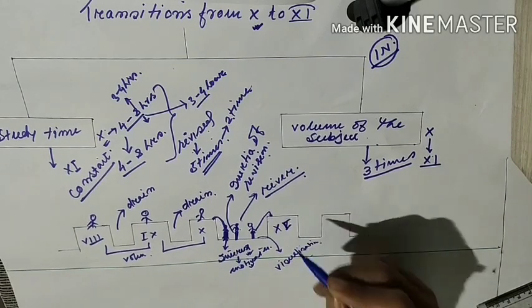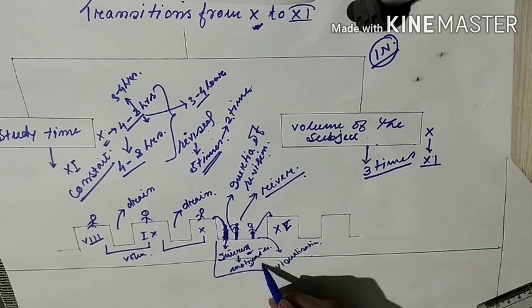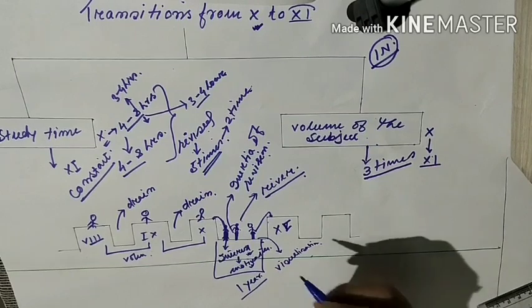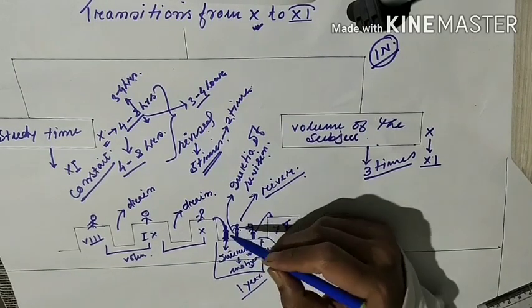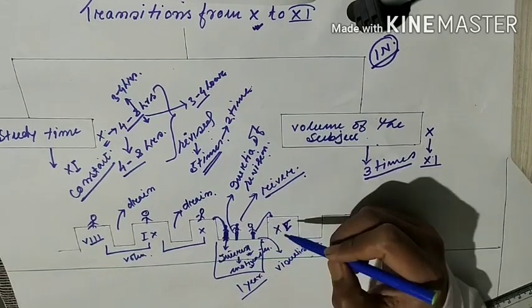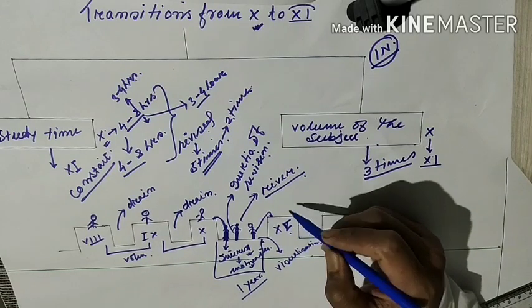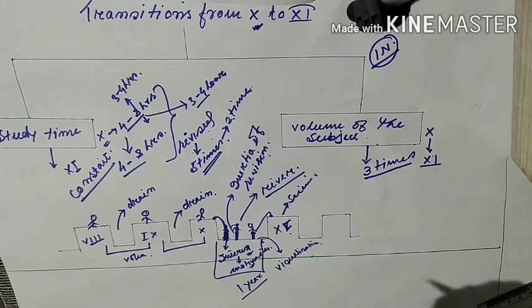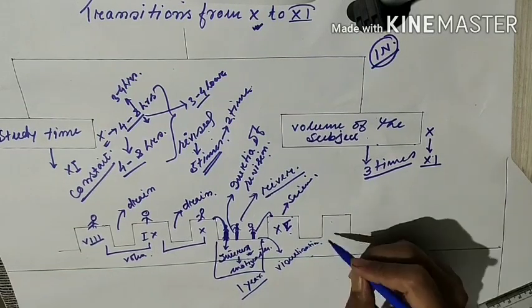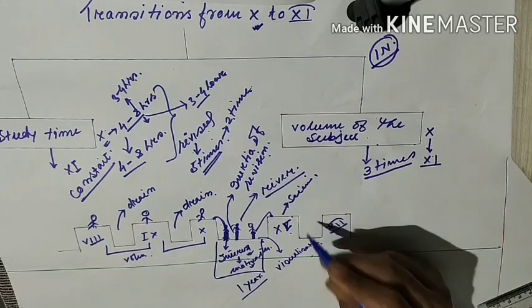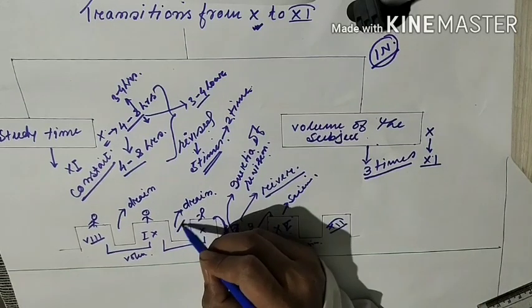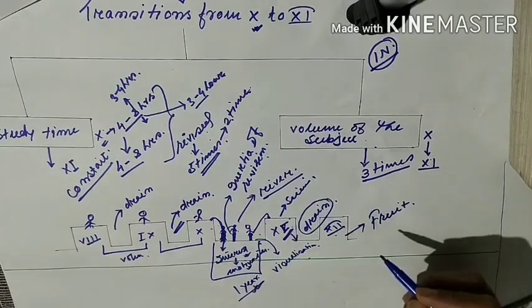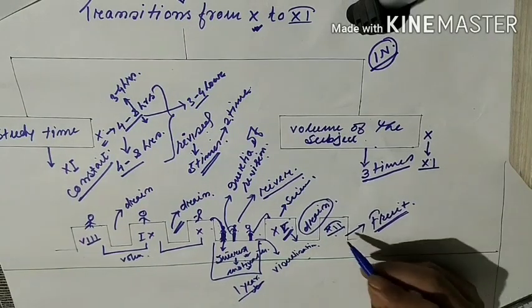So during this one year time, if you culture yourself and if you acquire these three valid points, then at class 11 you will be accustomed to science. And then from class 11 to 12, this gap will be a very small gap, similar to your drain. Now it will become a drain for you. You will get your proper fruit here.